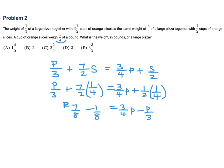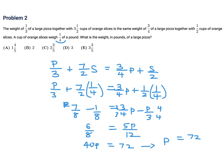So that looks like 6 over 8. And getting a common denominator — 4 and 3 — that will be 9P minus 4P over 12, which is 5P over 12. And if we cross-multiply, we get 40P equals 72, and therefore P is 72 over 40. Divide top and bottom by 8 and you get 9 over 5. And 9 over 5 is the same as 1.8.